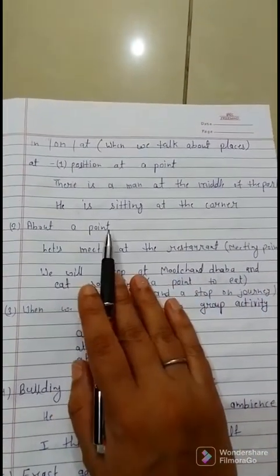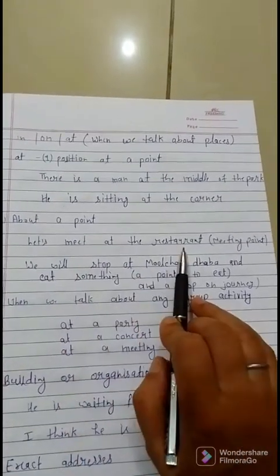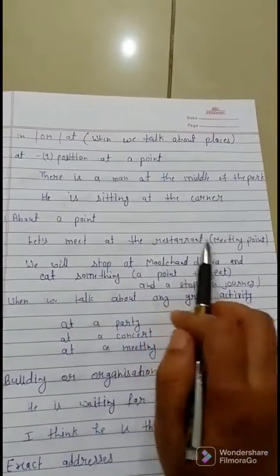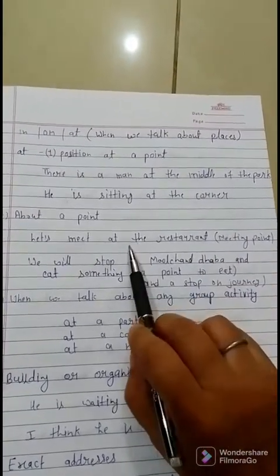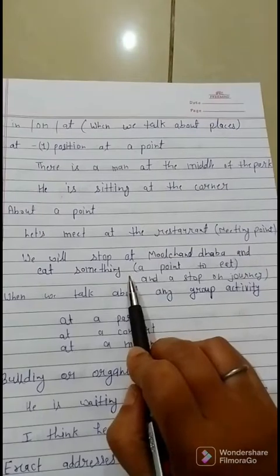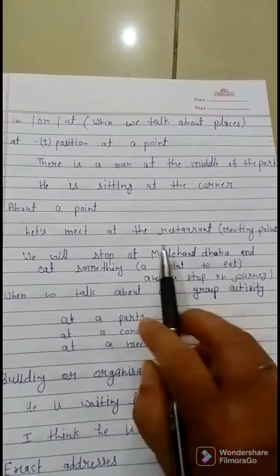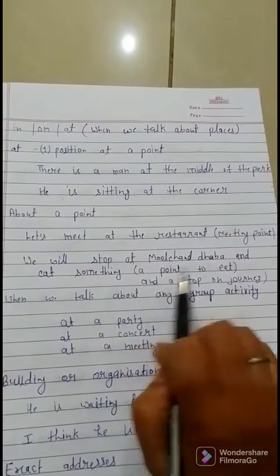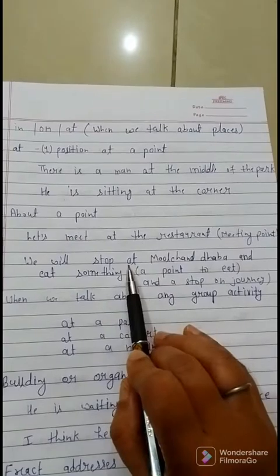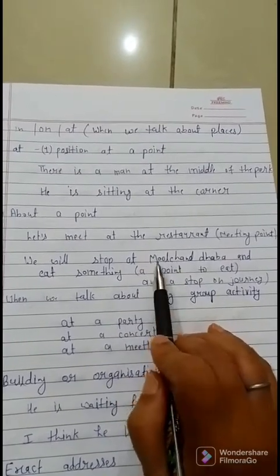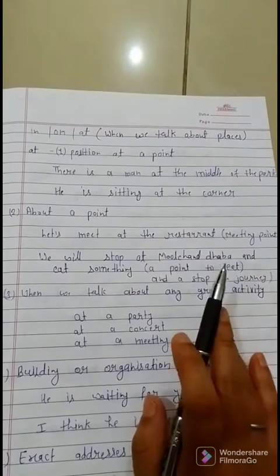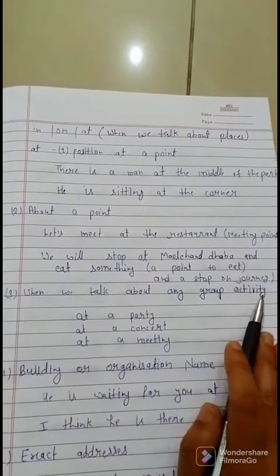Another use of 'at' is when we talk about a meeting point. For example, 'let's meet at the restaurant' — it's a meeting point, so we use 'at'. Another example: 'we will stop at Mulchan Dhaba and eat something' — this is a point on a journey, a stop where we will eat. So here also we use 'at' because it's a point on a journey.